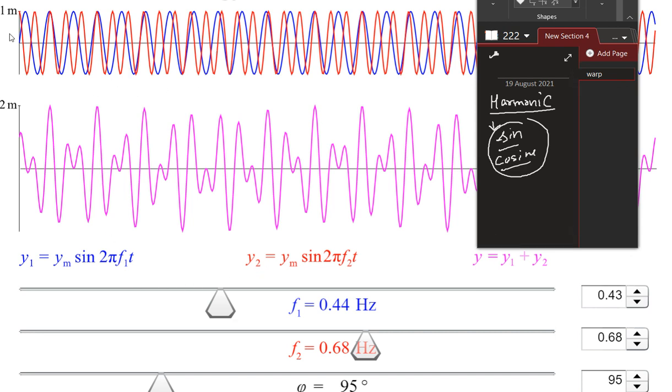Here it's shown that y1 is with blue color and you can see the wave there in blue, and the other wave is with red color.